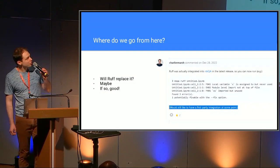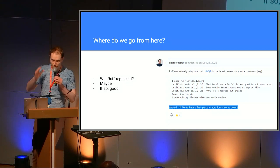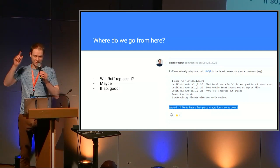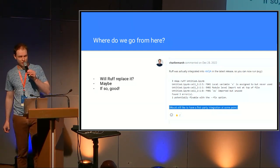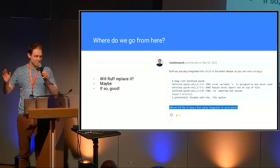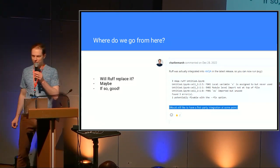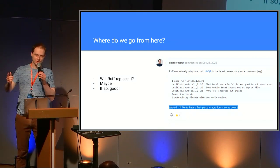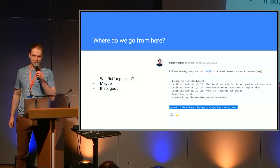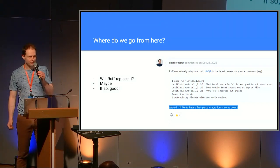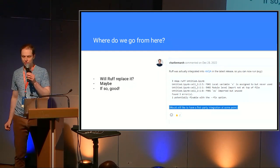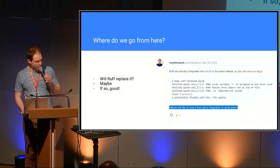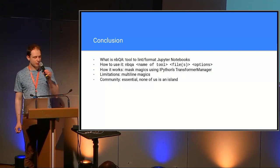Where do we go from here? Some of you might have heard of an amazing Python tool called Ruff, which is written in Rust. Like all Rust projects, it's blazingly fast and seems to be replacing every other code quality tool. Is it going to replace NBQA? Given a comment by the author, maybe. But that's okay — I'd be honoured if someone thought it worthwhile to rewrite this thing in Rust. But in the meantime, I'd like to think it's still relevant.